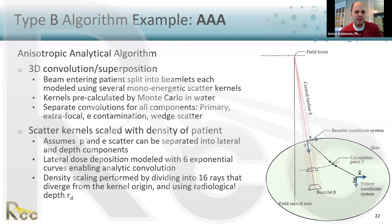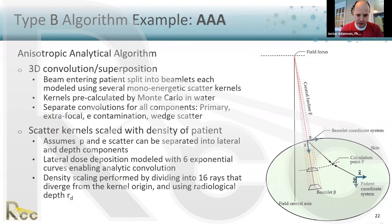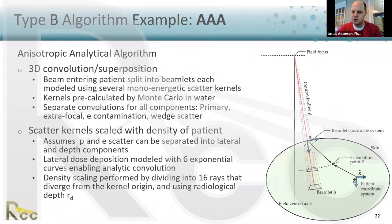Triple-A is a 3D convolution-superposition algorithm. The beam entering the patient is split into beamlets, each modeled with several monoenergetic scatter kernels pre-calculated by Monte Carlo in water. There are separate convolutions for primary, extrafocal, and electron contamination components; wedge contributions are also included. The scatter kernels are scaled with patient density. The lateral dose deposition is modeled with six exponential curves enabling an analytic convolution, and density scaling is performed by dividing into 16 rays that diverge from the kernel origin using the radiological path depth.